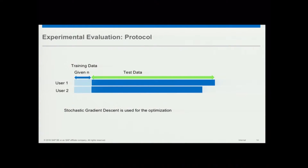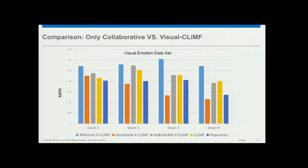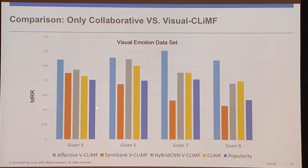The experimental protocol follows the same protocol as CLIMF: given N as training data and a test split for every user, we follow stochastic gradient descent. For only collaborative versus Visual CLIMF, there are three affective-based representations compared with CLIMF and a popularity-based approach on the visual emotion dataset. The metric is maximum reciprocal rank. The affective features are consistently better. The representation that you use for your content matters — affective features learned from photography and identified by experts are consistently better than the other representations.